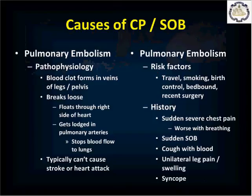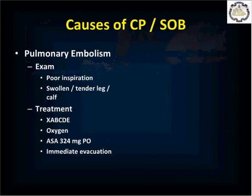The patient presents with sudden severe chest pain — though smaller clots may cause less — typically worse with breathing, and sudden shortness of breath. They may be coughing up blood, have unilateral leg pain and swelling, or pass out if the clot is large enough. On exam they may be tachycardic, tachypneic, and hypoxic, but may also have normal vital signs with a smaller clot. A small clot is a warning sign — the next clot could be fatal. A swollen or tender calf on one side is a red flag. Poor air movement due to pain-limited inspiration may also be noted.